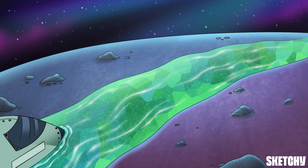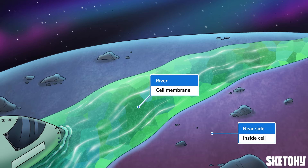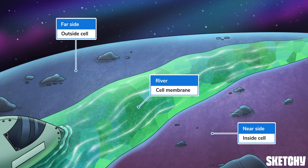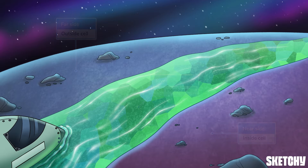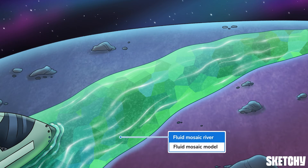We'll use this river to represent the cell membrane, which you might also hear called the plasma membrane. And that land in front will represent inside the cell, or the intracellular environment, while the far side represents the extracellular environment outside the cell. This fluid river of mosaic space goo represents that the structure of the cell membrane is often referred to as the fluid mosaic model.